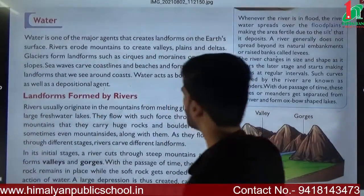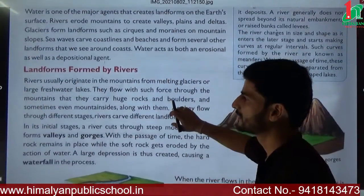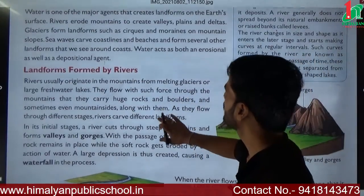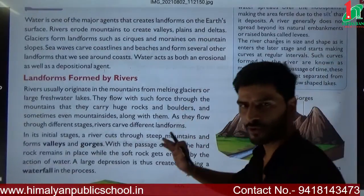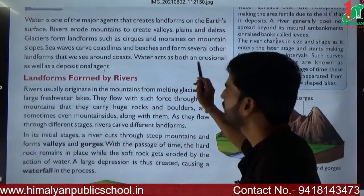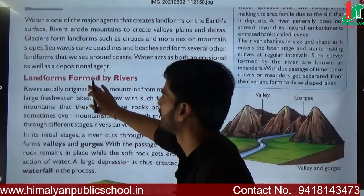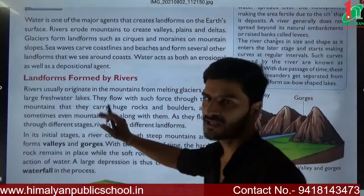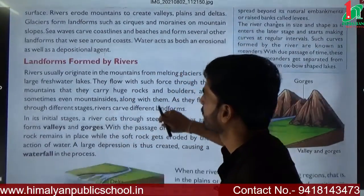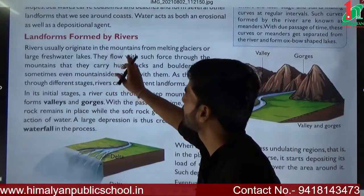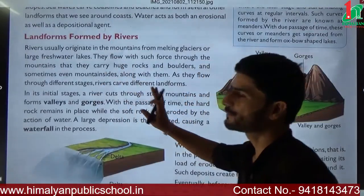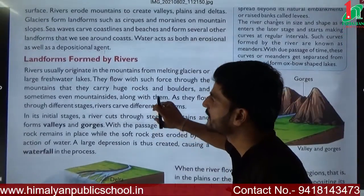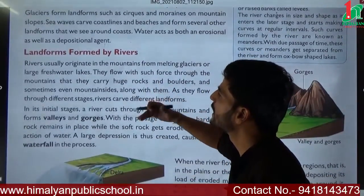Water acts as both an erosional as well as a depositional agent. If water is flowing in a river, there will be erosion, and the eroded material sediments are then deposited. So water acts as both erosional and depositional agent. Now let's see the landforms created by rivers. When the river flows over rocks, if there is erosion, it creates landforms.